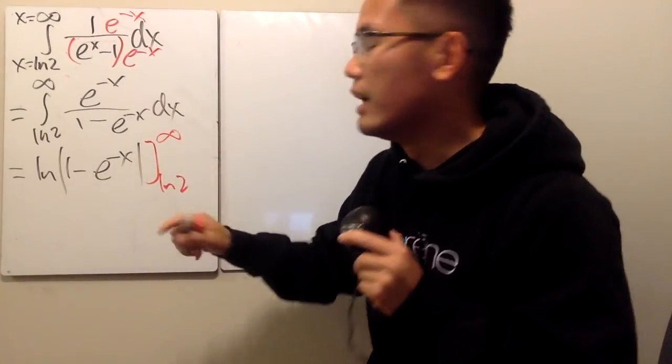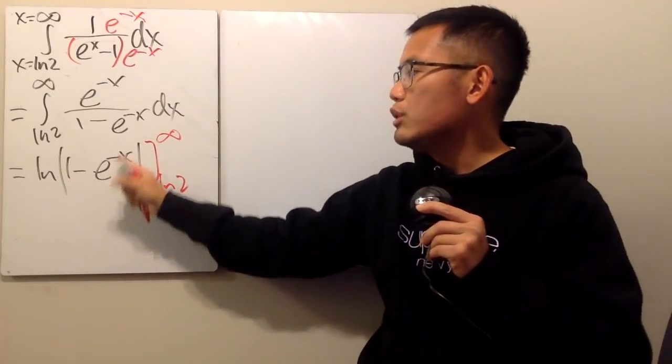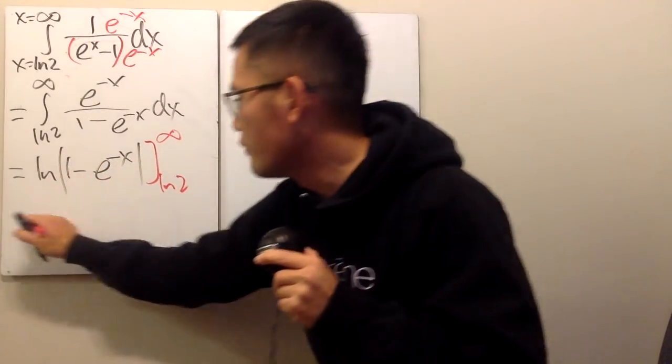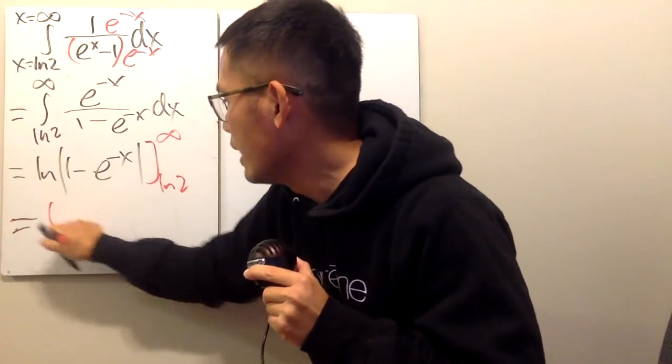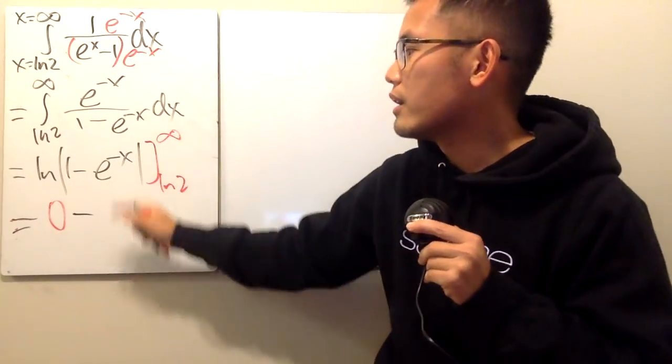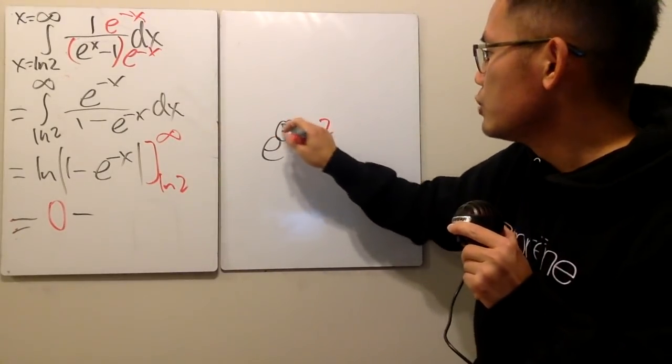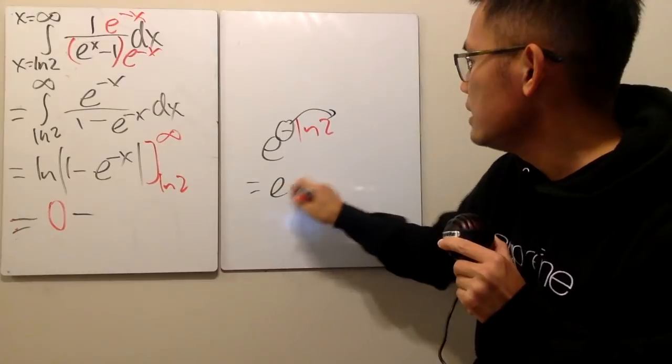And of course, plug in numbers ln 2 to infinity. And the next thing is that if you put infinity right here, e to the negative infinity is 0, ln 1 is 0. So the first part is going to be 0. And then we are going to minus, put ln 2 right here. Well, be really careful. Here we have e negative ln 2, right?